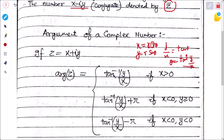The argument conditions: arg(z) = tan⁻¹(y/x) if x > 0; arg(z) = tan⁻¹(y/x) + π if x < 0 and y ≥ 0.